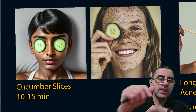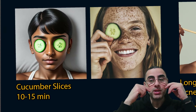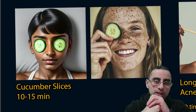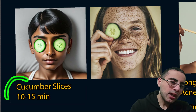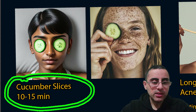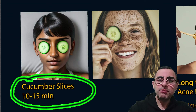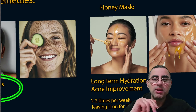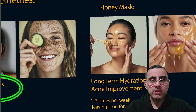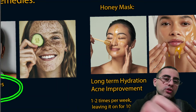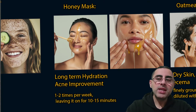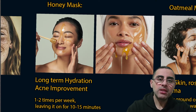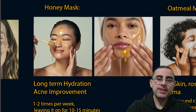Now let's talk about home remedies. Cucumber slices are well known, especially under the eyes — they improve hydration and reduce swelling. Apply cucumber slices for around 10 to 15 minutes, but note this is only a short-term effect and is not very powerful overall.